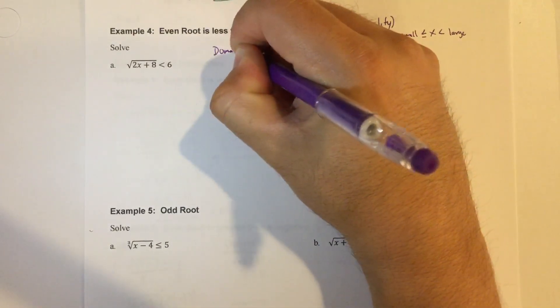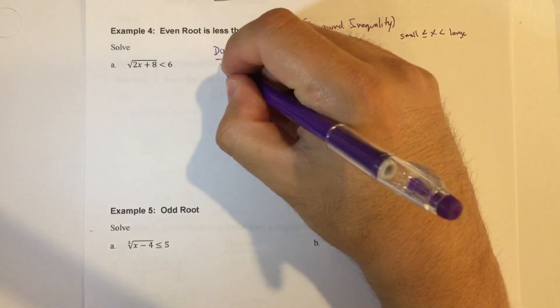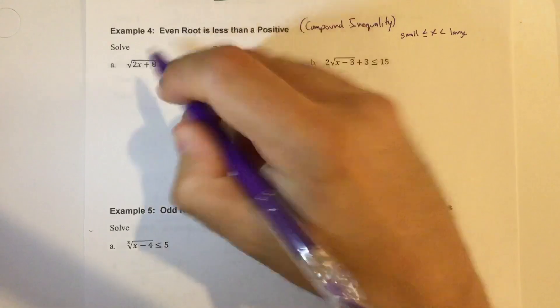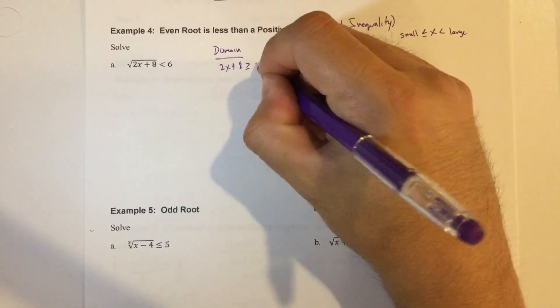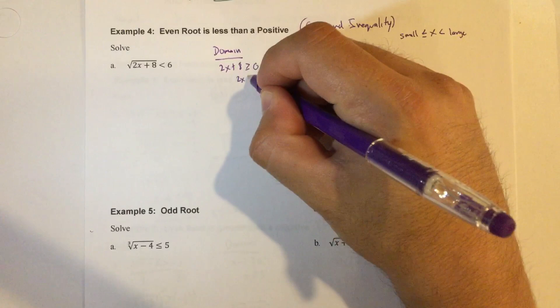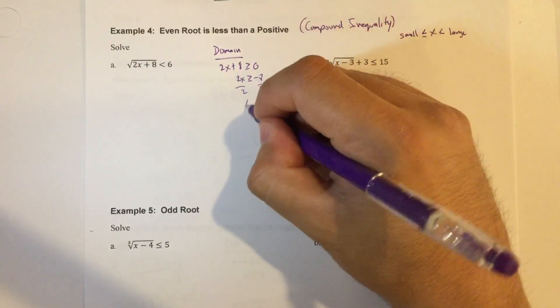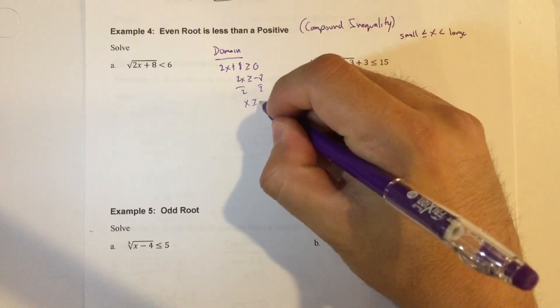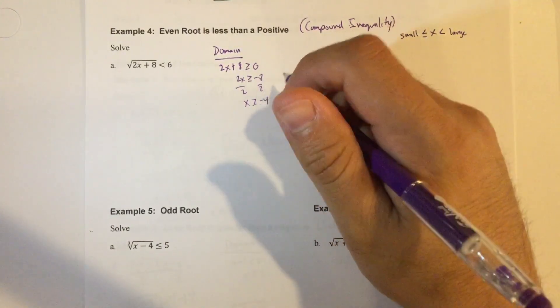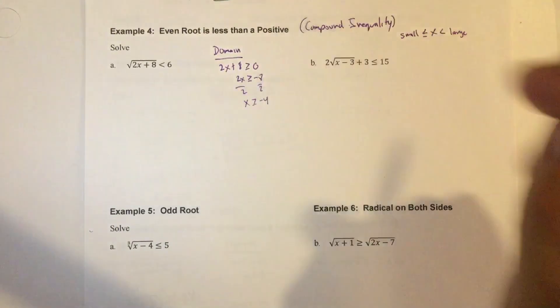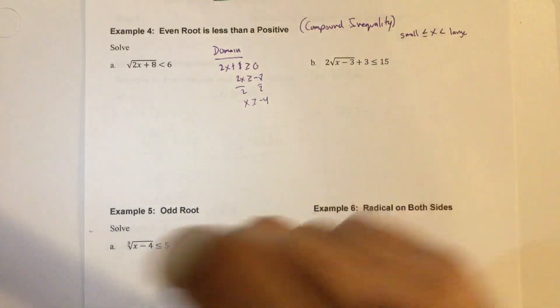So the domain here is 2x plus 8, that's inside the radicand, is greater than or equal to 0. First, you would subtract 8, divide by 2. x is greater than or equal to negative 4. So that should be my domain right there.